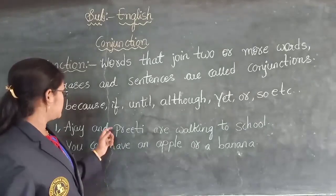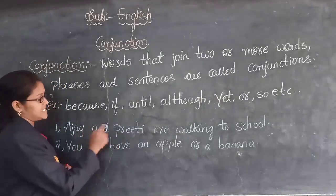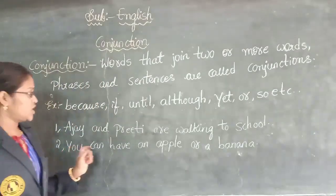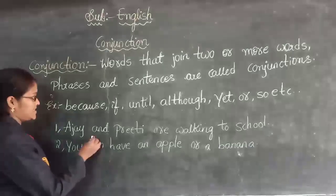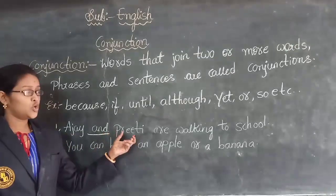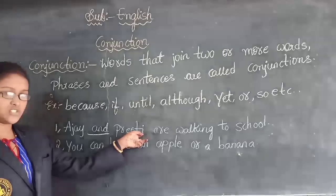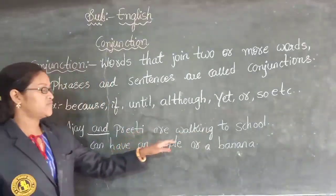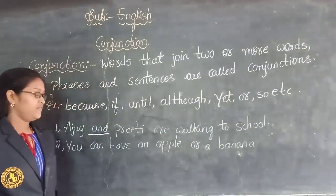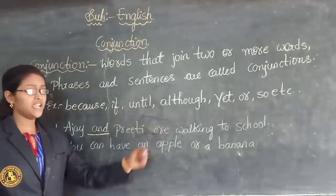I have written two sentences using conjunctions. First sentence: 'Ajay and Priti are walking to school.' In this sentence, 'and' is the conjunction. It has joined two names — Ajay and Priti. You could also write two individual sentences: 'Ajay is walking to school' and 'Priti is walking to school.' But here we combined the two names using the conjunction 'and' into one sentence.